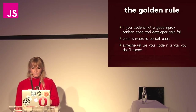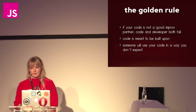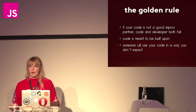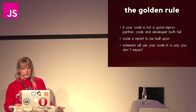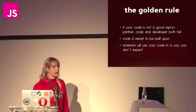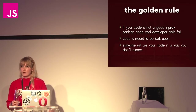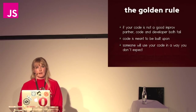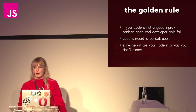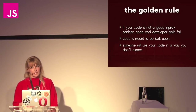So again, the golden rule: your code needs to be a good improv partner. Because if it's not, then your code and the developer who's using it fail together. Your code is always going to be built upon — so even if you're not writing a library or a toolkit, somebody's always going to come along and work with that code. You should anticipate that, because the alternative is that whatever website your code is on just gets scrapped, and that's no way to think.